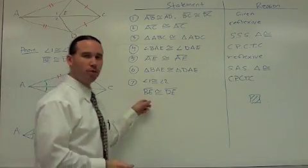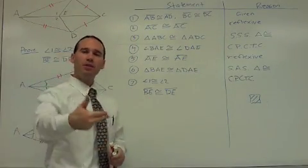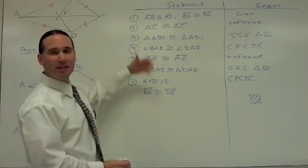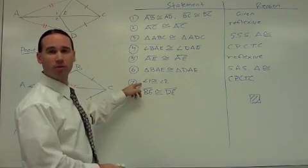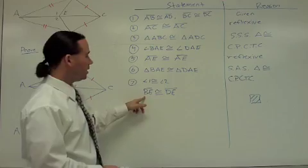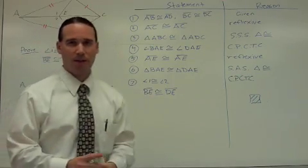Now, normally you wouldn't be asked to prove two things in a proof. I've given you these two because this problem could easily be stated as prove angle 1 congruent to angle 2 or prove BE congruent to DE. The format would be exactly the same.